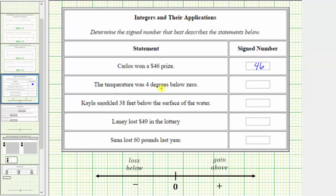Next, the temperature was four degrees below zero. Because the temperature is four degrees below zero, negative four best describes the statement. If the temperature was four degrees above zero, we would use a positive four.